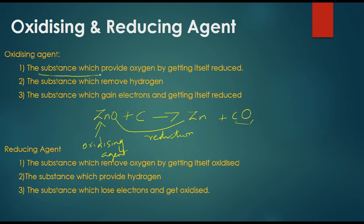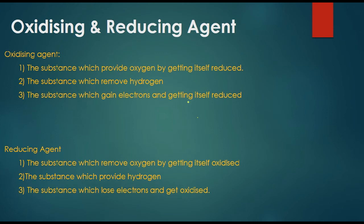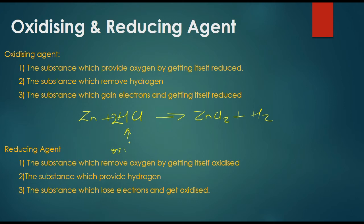The substance which provides oxygen by getting itself reduced is the oxidizing agent. ZnO and ZnO are reduced — this is an oxidizing agent by definition. In terms of electrons: Zn plus HCl giving ZnCl2 plus H2 — HCl is the oxidizing agent.